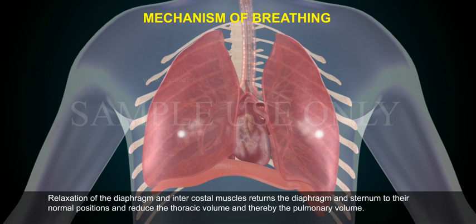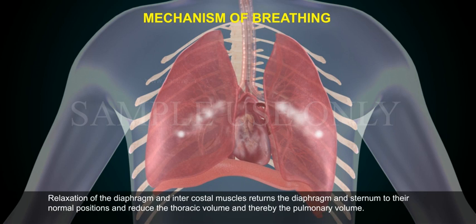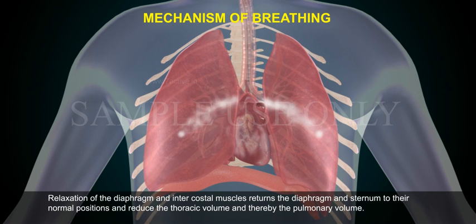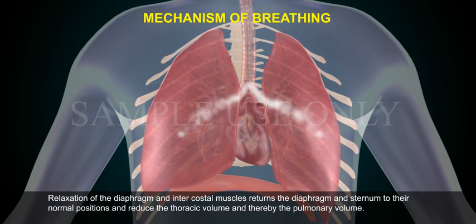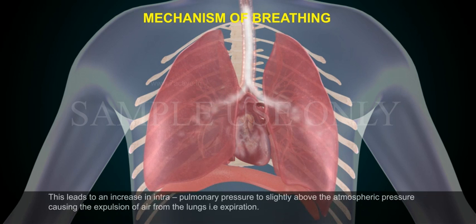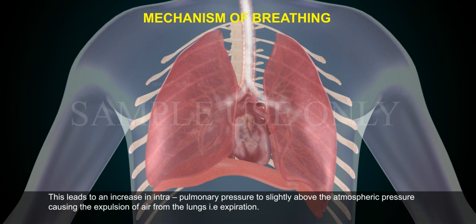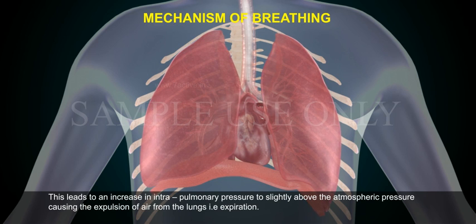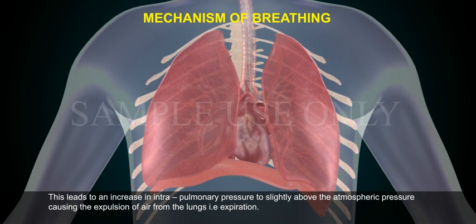Relaxation of the diaphragm and intercostal muscles returns the diaphragm and sternum to their normal positions, reducing thoracic volume and thereby pulmonary volume. This leads to an increase in intrapulmonary pressure to slightly above atmospheric pressure, causing the expulsion of air from the lungs — that is, expiration.